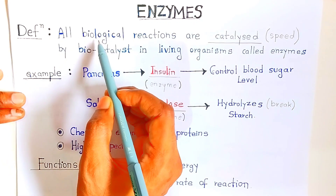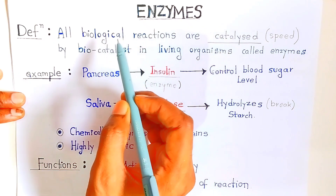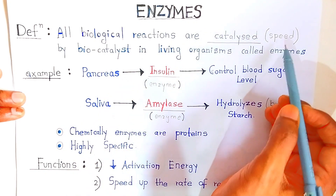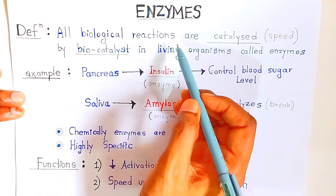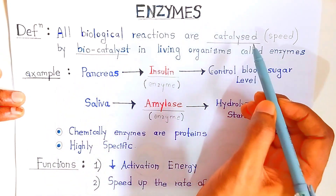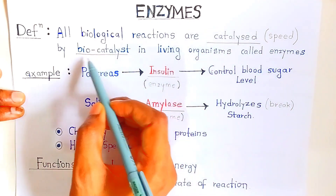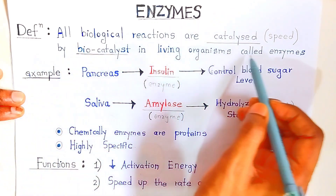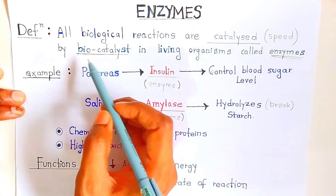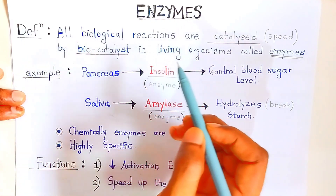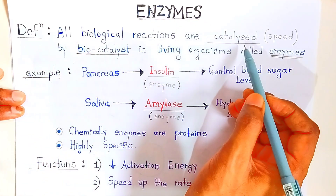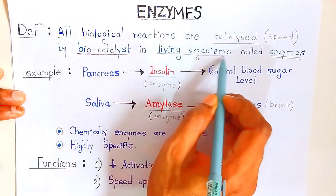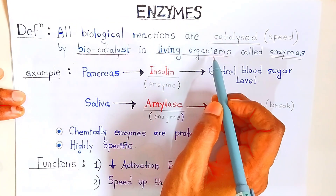All biological reactions — the reactions which take place in plants and animals — are catalyzed, meaning sped up, by a bio-catalyst. There is a biological chemical which we call a bio-catalyst. That biological chemical which catalyzes, that means it speeds up the reaction. That bio-catalyst in living organisms is called an enzyme.